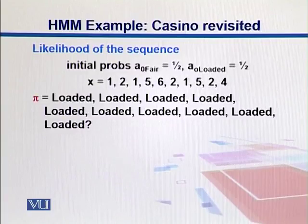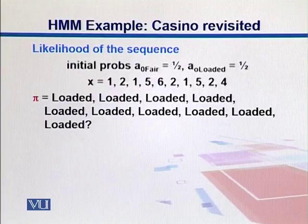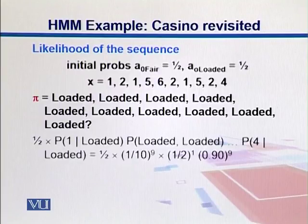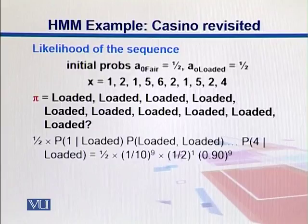What is the likelihood of this loaded one? So same way we can calculate for the loaded one. Now loaded is biased towards 6, so 6 will get more where rest of them will get less. So when we plug in, it becomes something like this. So we have 9 events where the probability goes to 1/10. One event we observed 1 six over here where probability goes to 1/2.